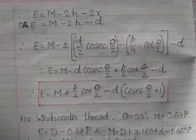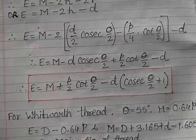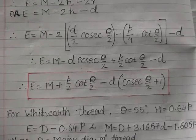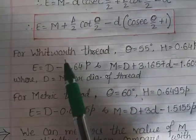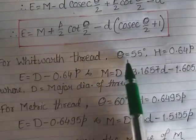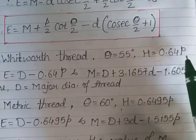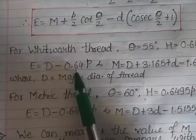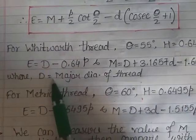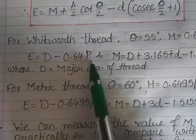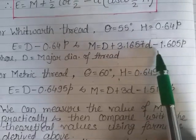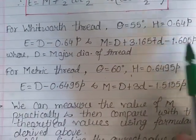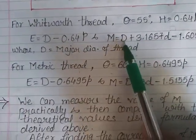This derivation comes for 10 marks in exams. They may also ask for the values for Whitworth thread and metric thread. For Whitworth thread (British standard), the thread angle is 55 degrees and height of thread H = 0.64 × pitch. So the effective diameter E = D − 0.64P, where D is the major diameter. And M = D + 3.1657d − 1.605P. By measuring M and knowing D, we can calculate E.